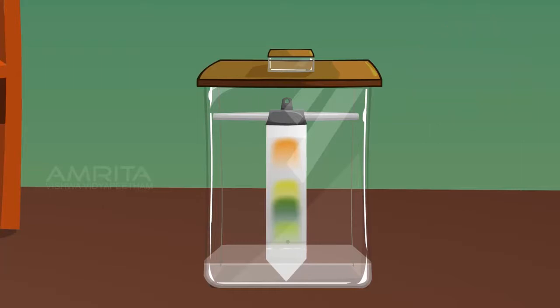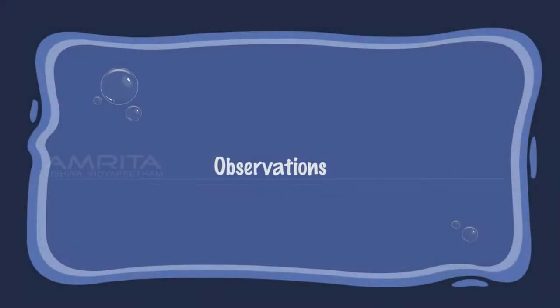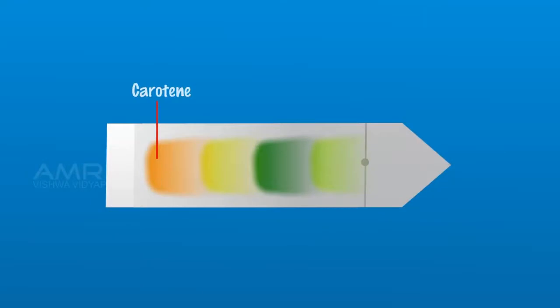Take out the strip carefully and let it dry. Observations: The dried chromatographic paper strip shows four distinct pigment bands. Different pigments can be identified by their colours.